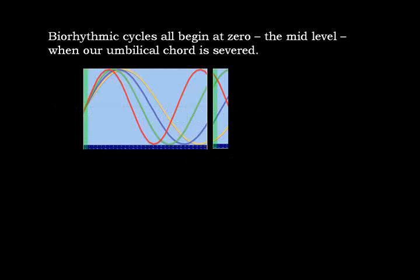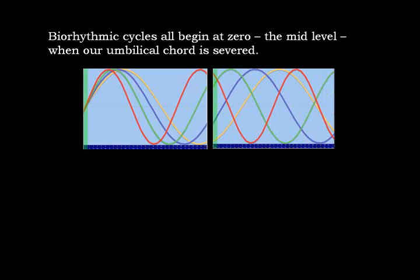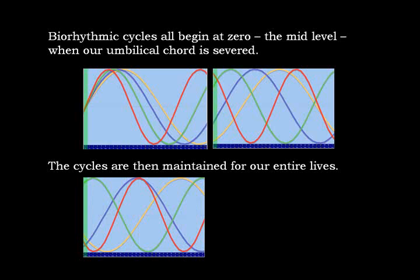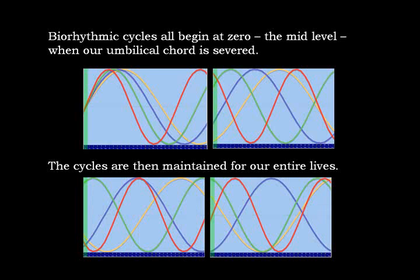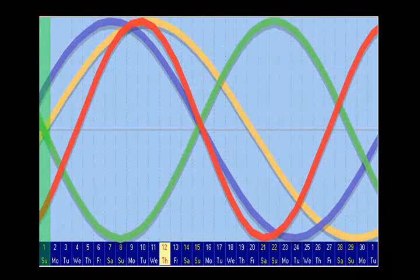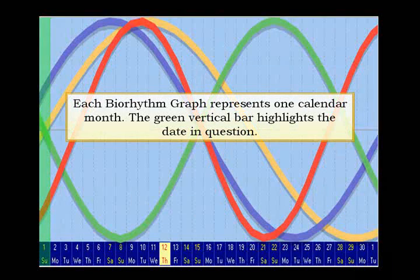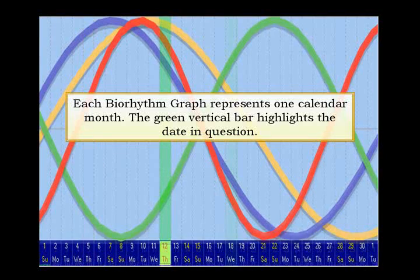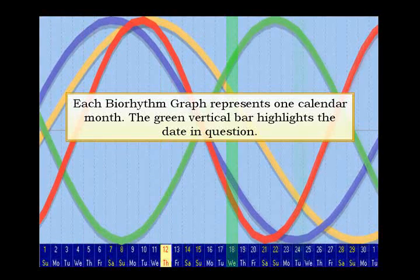Biorhythmic cycles all begin at zero, the mid-level, when our umbilical cord is severed. The cycles are then maintained for our entire lives. Each biorhythm graph represents one calendar month. The green vertical bar highlights the date in question.